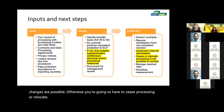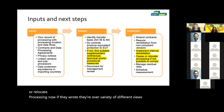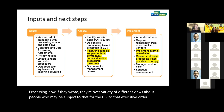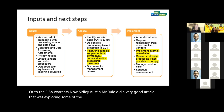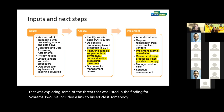There are a variety of different views about who may be subject to the US executive order or to FISA warrants. Sidley Austin's Mr. Rawl did a very good article exploring some of the threat that was listed in the finding for Schrems 2. I've included a link to his article if someone wants to look at that to make their own assessment of potential risk.